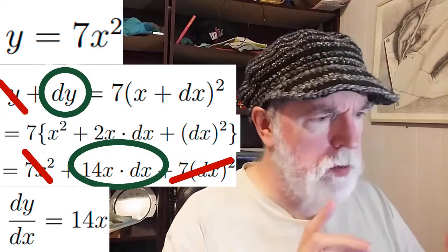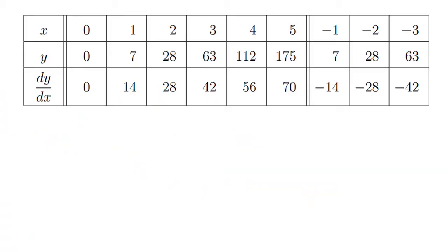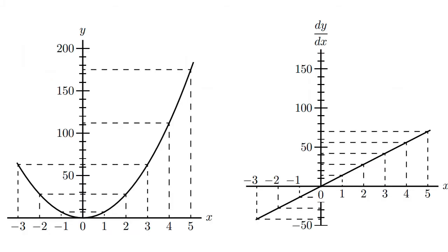Let's take a closer look at this example. We'll set up a table with some sample x's and the corresponding y's when y equals 7 times x squared. And then we'll use our dy by dx equals 14x to work out the dy by dx for each of these. And then we'll plot each of these points. And let's have a look.